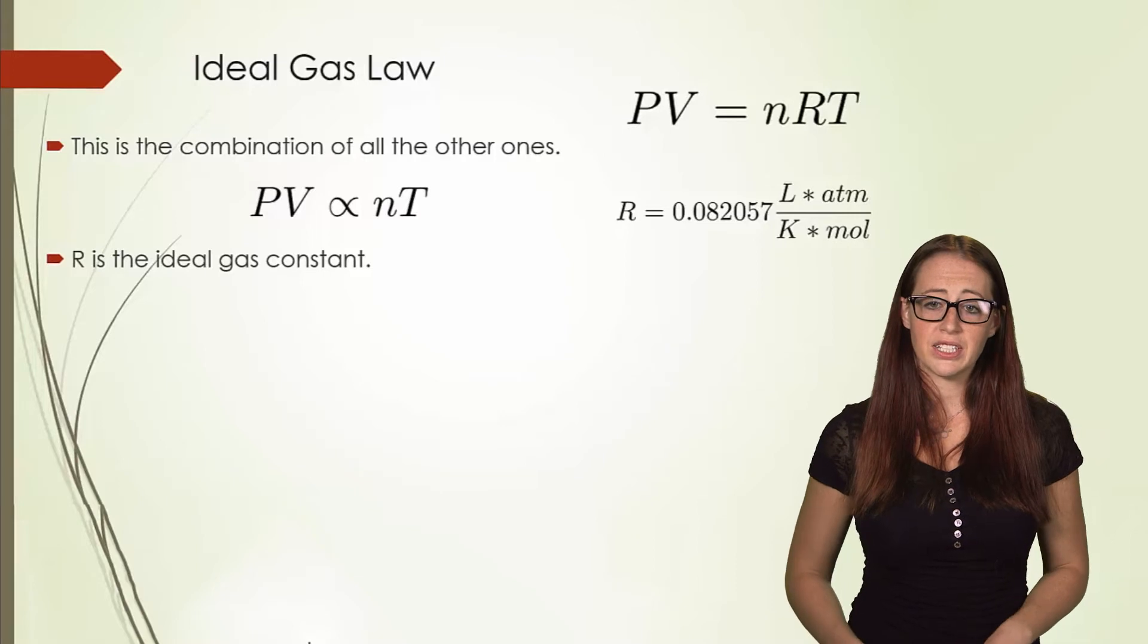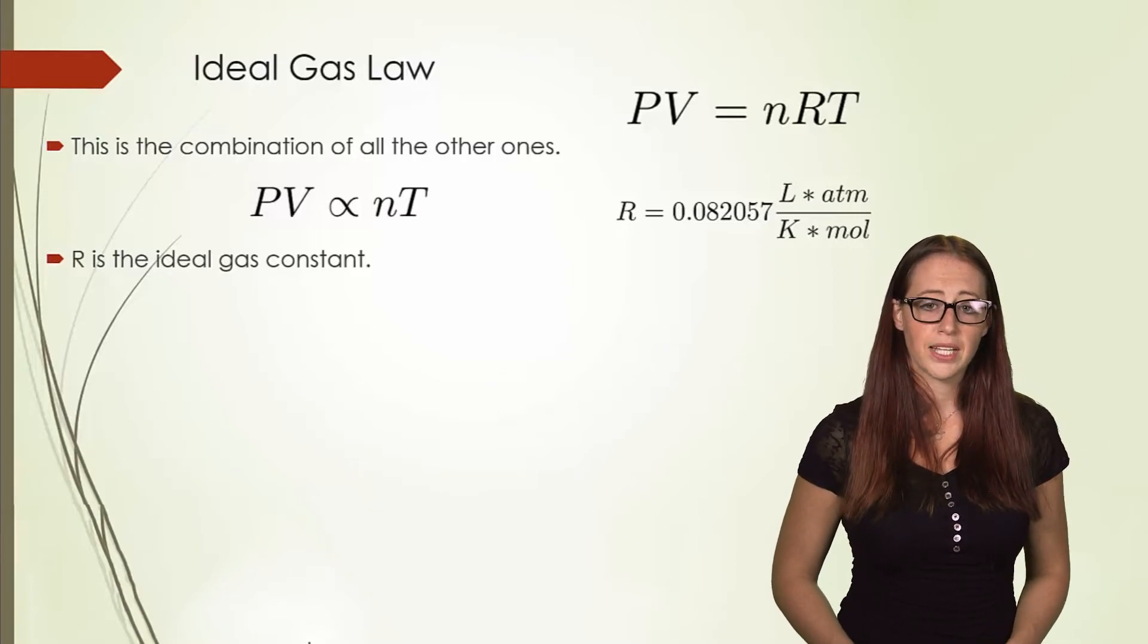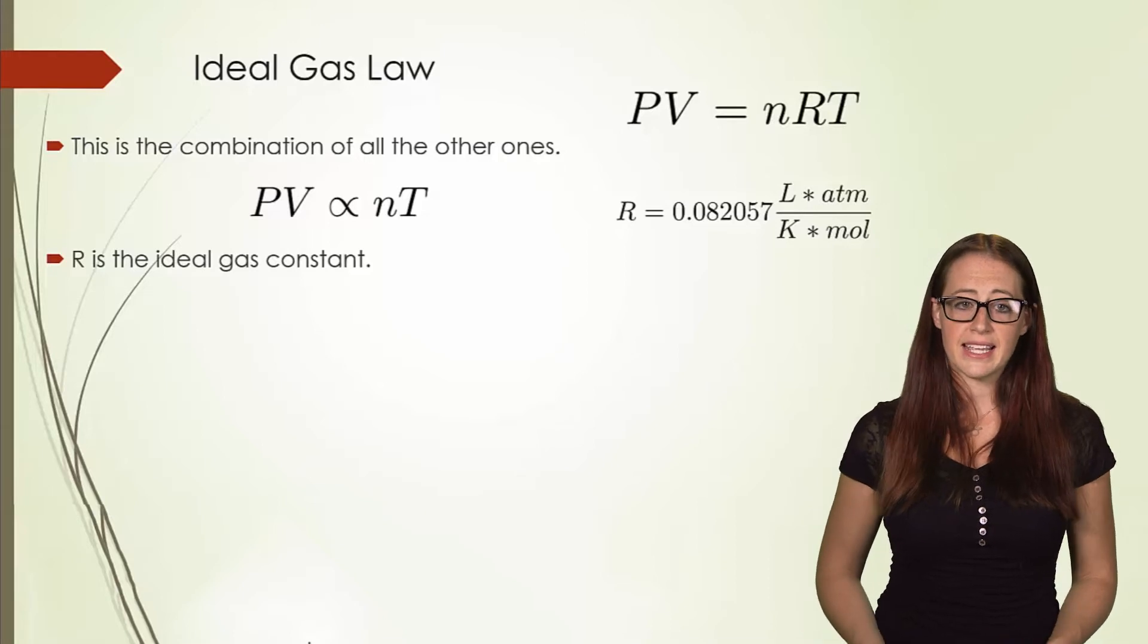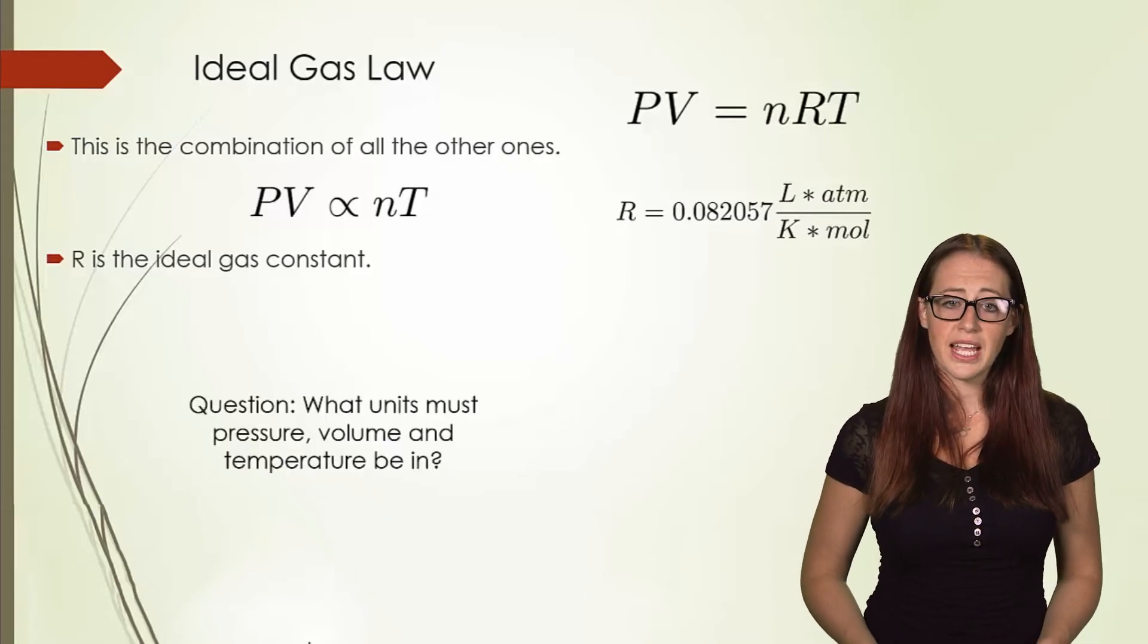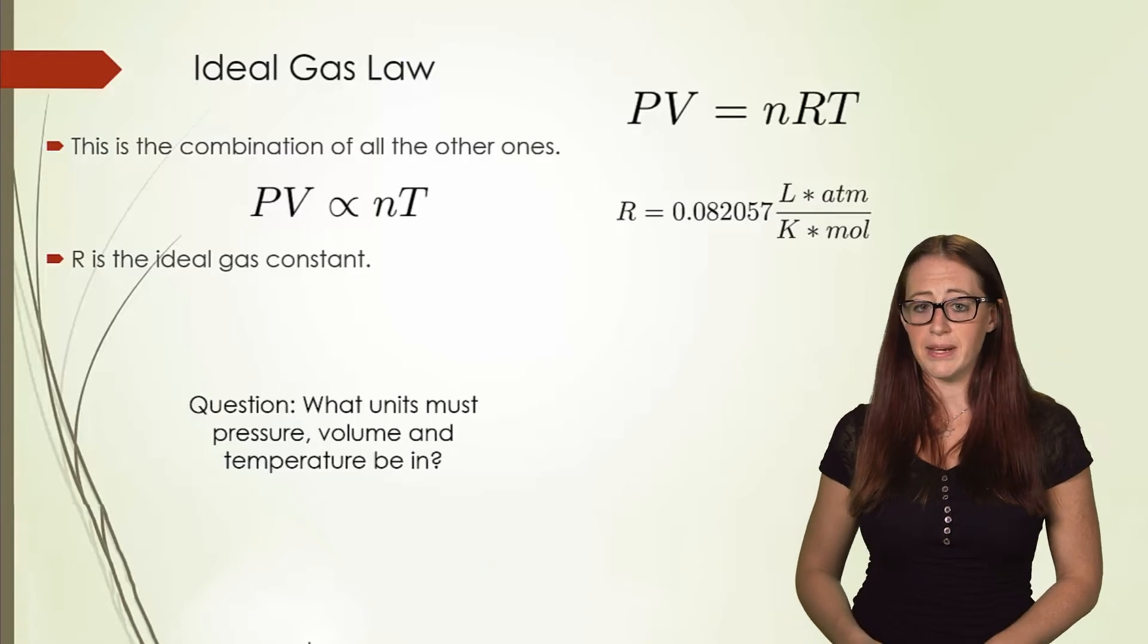And this is where the ideal gas law comes from, and the ideal gas law constant comes from. By using the constant, we can say that PV is equal to nRT, an equation that most of you already have memorized by now from high school.